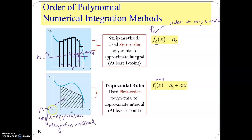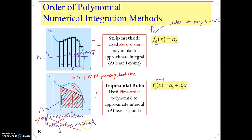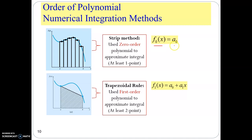If you choose n equal to 1 segment to solve the integration problem, this is called the single application integration method. If you choose n to be more than one segment, for example two segments, then we call it the multiple application numerical method. Normally we don't perform single application integration since multiple application is more accurate. We use single application only if data is limited. For the zero order method, you use a constant to estimate the height function, and you need at least one point to find that constant.